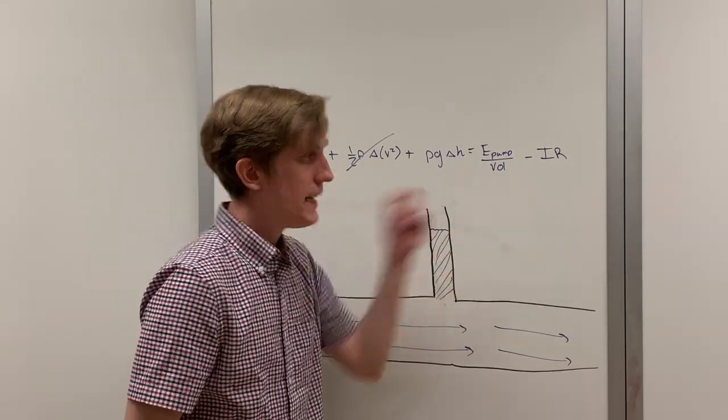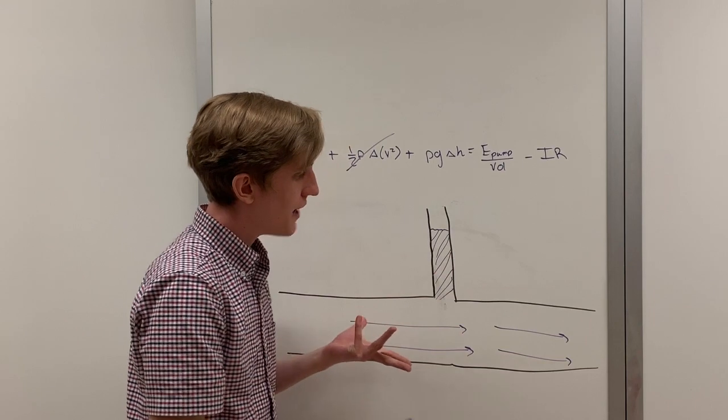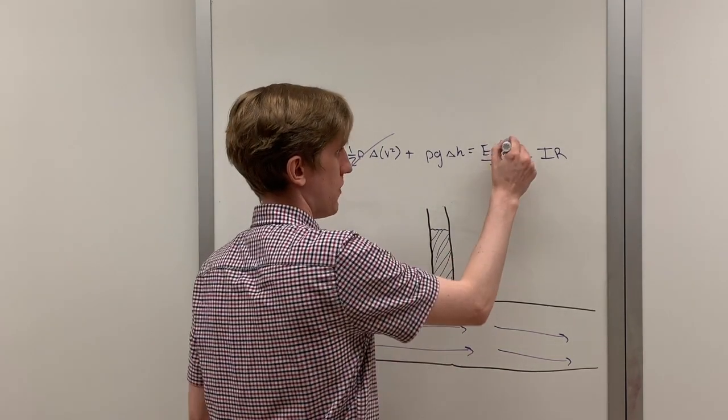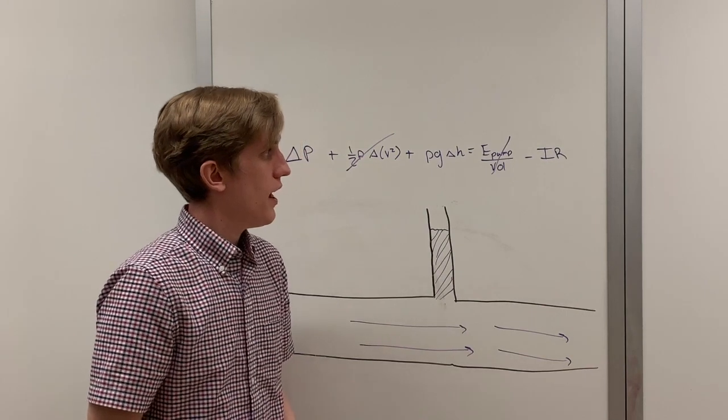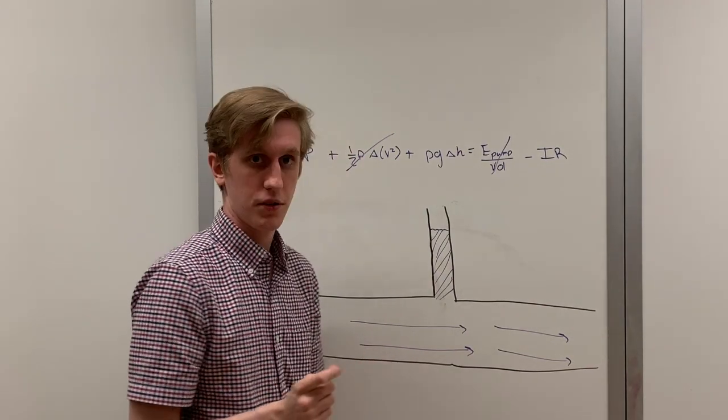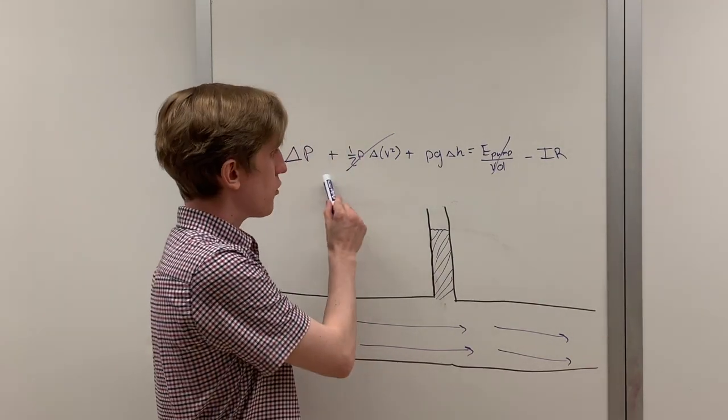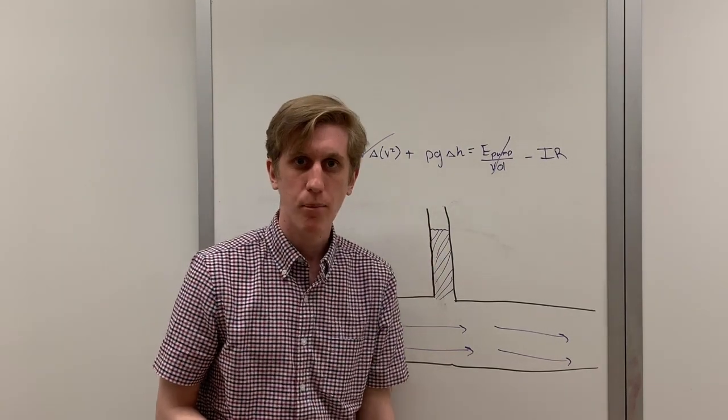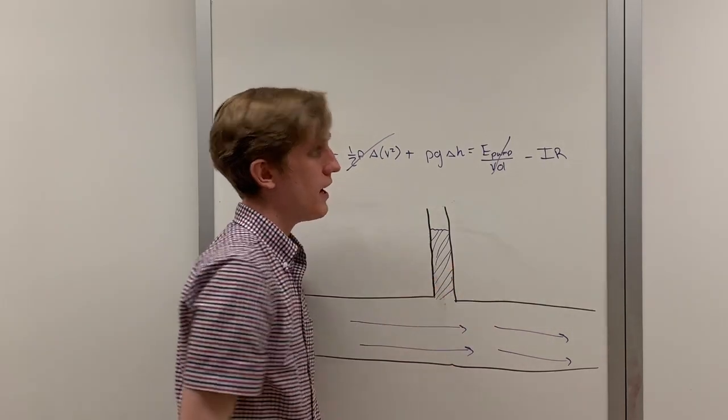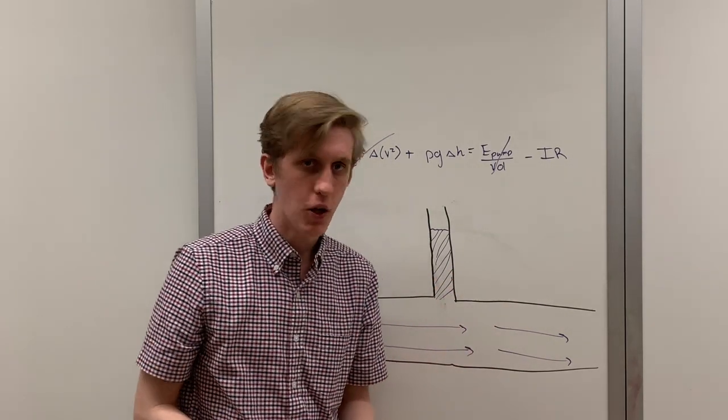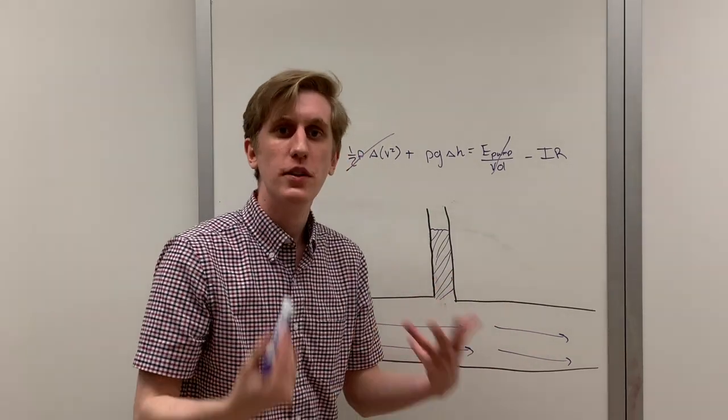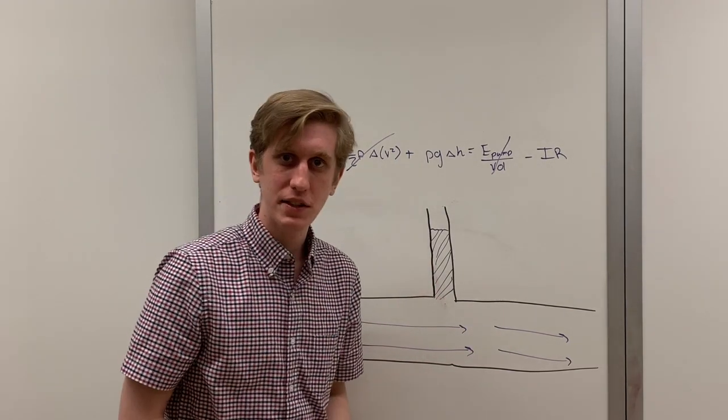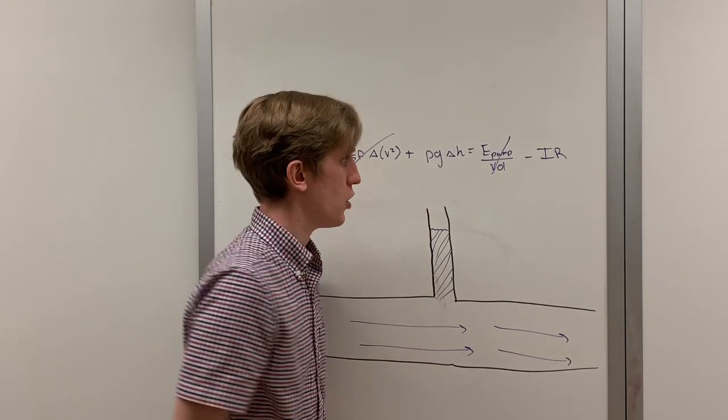Next we have the pump. Now looking at this diagram, I do not see a pump. So we do not need to consider that term. The final term is the resistance term. Now remember we threw away the kinetic energy term because the fluid in the stand pipe wasn't moving. We can do the same here because resistance only occurs when water is actually flowing. In this example, the fluid is not moving through the stand pipe and as such there is no resistance.